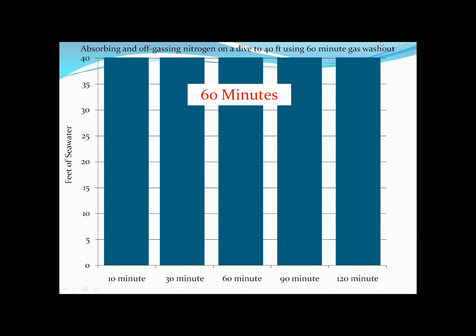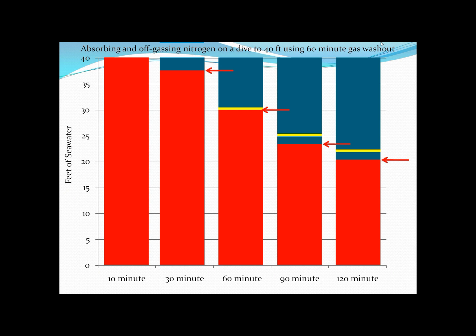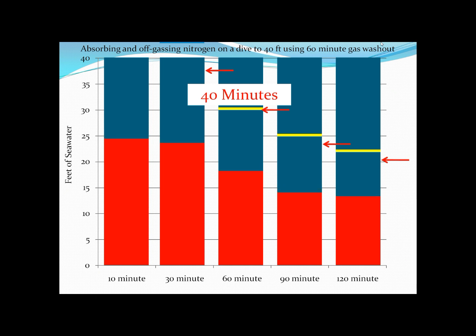That difference becomes even more noticeable when we imagine the 40-foot dive. At the end of that 40-foot dive, at the time we decided to surface and start our surface interval, the nitrogen loadings were as shown. Now let's watch the nitrogen leaving our body using a 60-minute gas washout calculation — this is how the nitrogen is leaving your body according to the way the RDP calculates it.